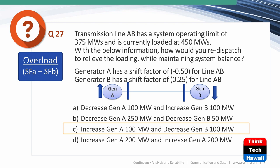Next question uses generation shift factors. Transmission line A-B has a SOL of 375 megawatts and is currently loaded at 450 MW — overloaded by 75 megawatts. Generator A has a shift factor of -0.5 for line A-B; generator B has a shift factor of +0.25. The correct answer C is to increase generation A by 100 megawatts and decrease generation B by 100 megawatts, which provides the 75 MW relief needed to bring the line back to 375.